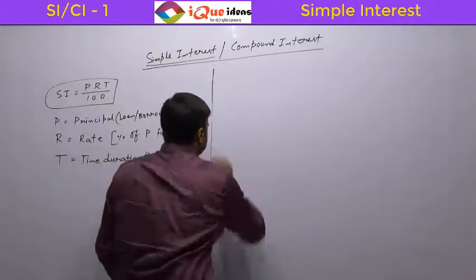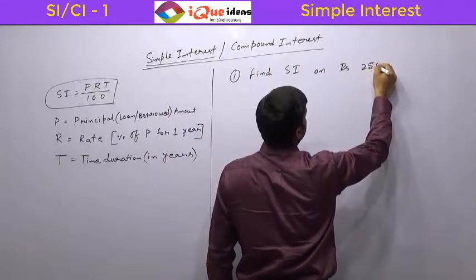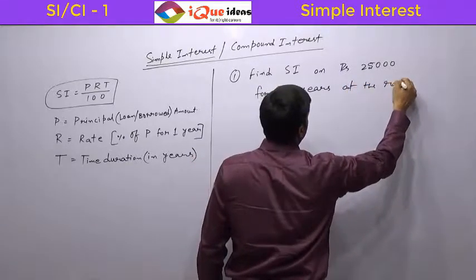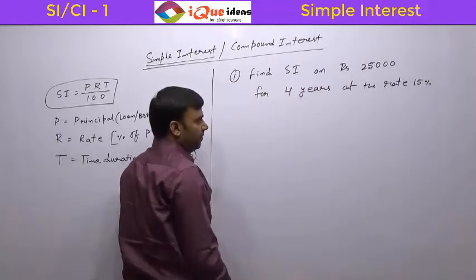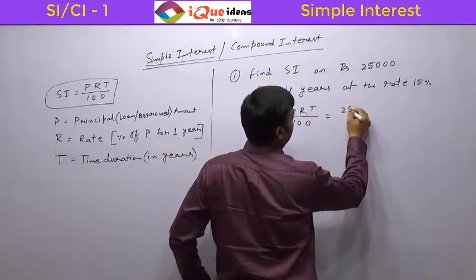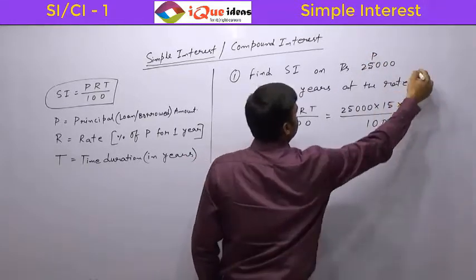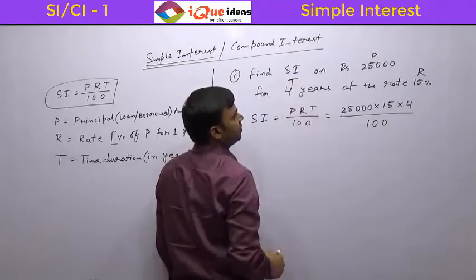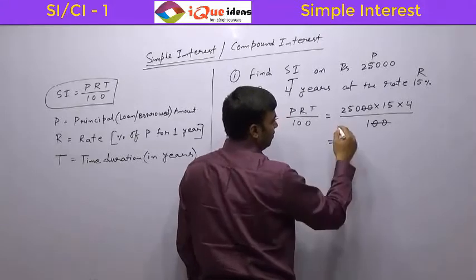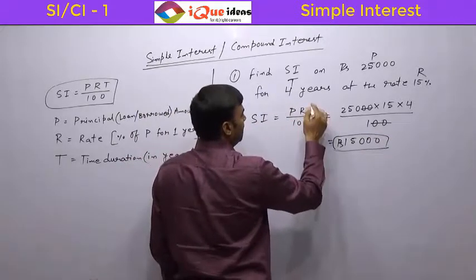Let us take some examples. Find simple interest on rupees 25,000 for 4 years at the rate 15 percent. One method is to directly use the formula: simple interest = PRT/100. So P is 25,000, R is 15, T is 4, divided by 100. Simplifying, the zeros cancel, 15 × 4 is 60, and 60 × 250 gives 15,000 rupees.